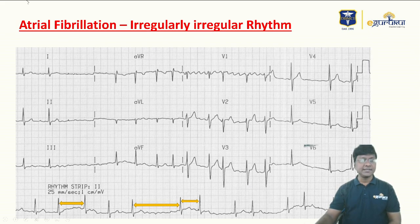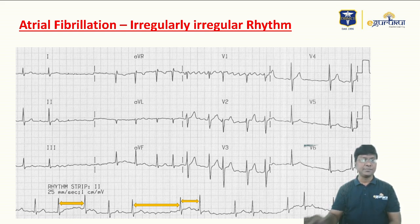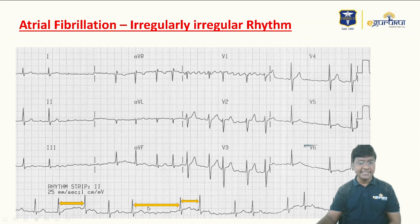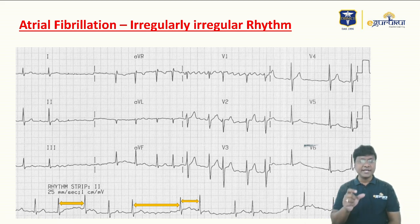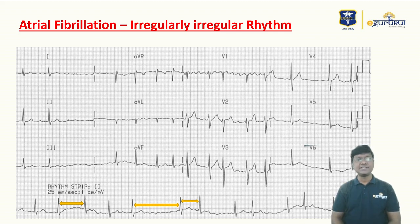In atrial fibrillation, the key finding is an irregularly irregular rhythm with a variable RR interval. I've marked the variable RR intervals with yellow arrow marks. Additionally, there is an absent P wave and the presence of fibrillatory waves — these are the ECG changes in atrial fibrillation.